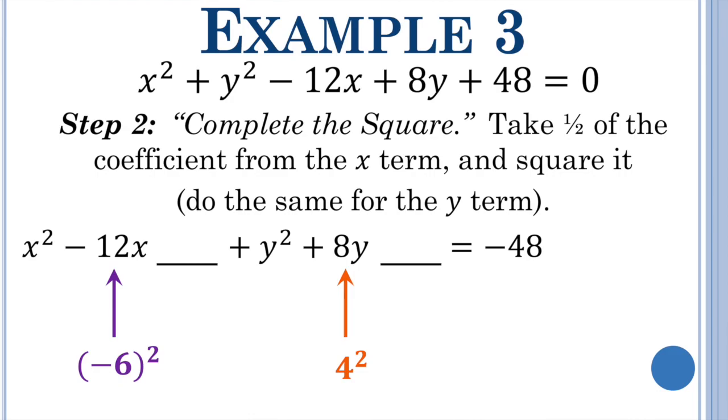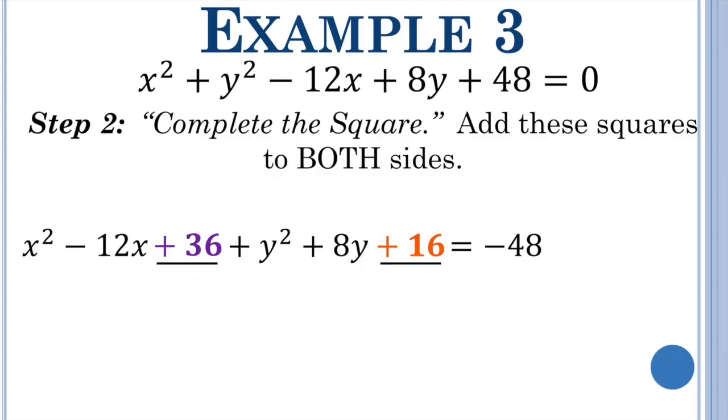Isolate the constants, what you must do. Take half of these terms, power of deuce. Add these squares to both sides and then produce a factor form of H, K, and R are shining through.